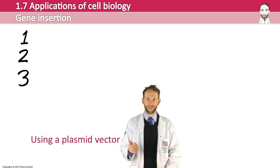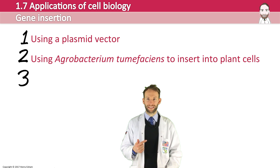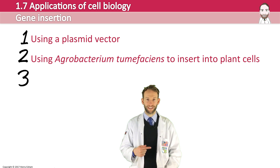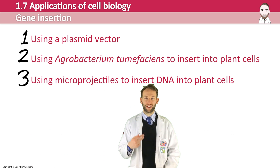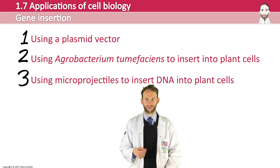One: using a plasmid vector. Two: using something called Agrobacterium tumefaciens to insert it into plant cells specifically, or three: using microprojectiles to insert DNA into plant cells.